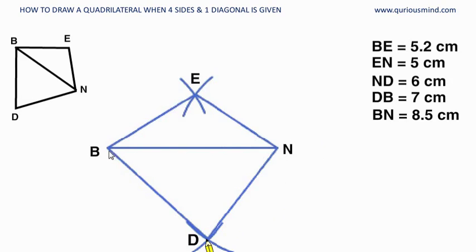The key point here is we have drawn the diagonal first. Can we draw the quadrilateral by drawing any other side first? Yes we can draw but this is most easiest way to draw. So draw the diagonal first and you can get these two points on either side of the diagonal by using the length of sides.